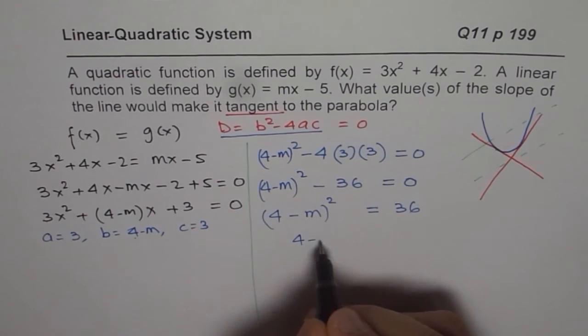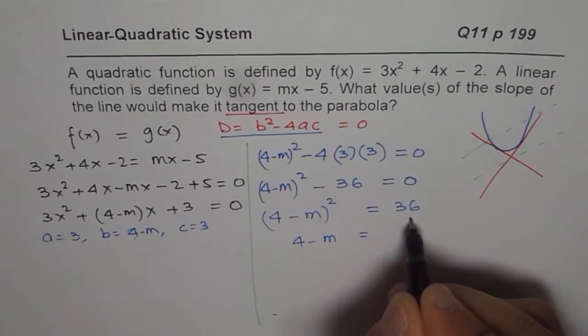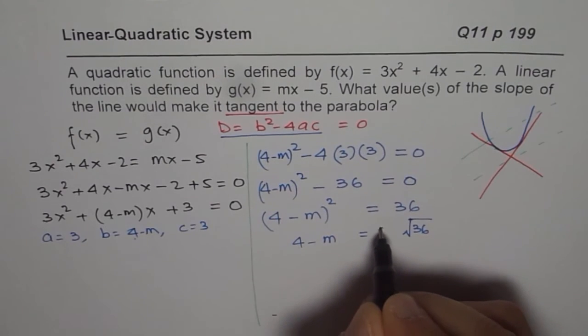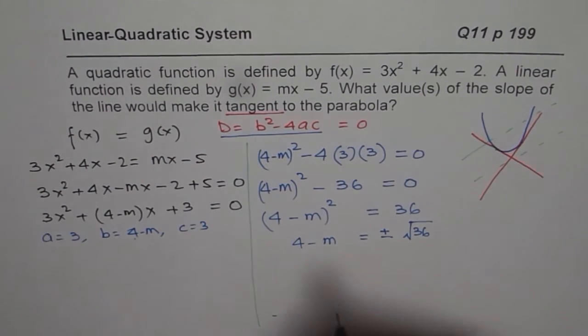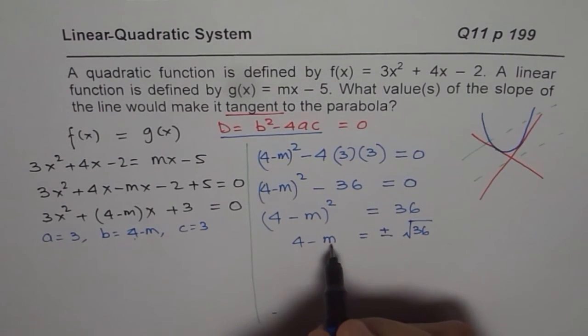Now you square root it. So we get 4 minus m equals to square root of 36. Whenever you square root, you have to write plus and minus. That gives you two solutions. So we can find m now.